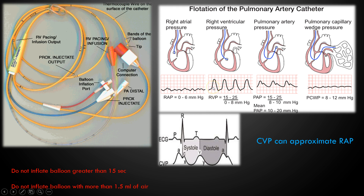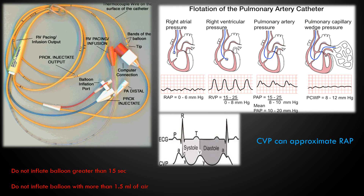It is very common to see PVCs and ectopy because when the catheter crosses into the right ventricle, the right ventricle is very hypersensitive to foreign objects and will produce dysrhythmias. You must be prepared ahead of time — have a crash cart available and be ready, because ventricular tachycardia could occur and the patient may lose their pulse. You have to be ready in case that situation occurs.